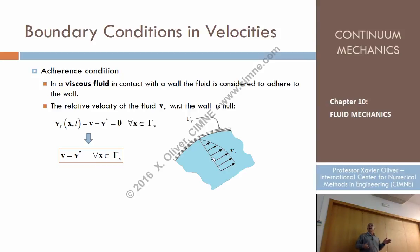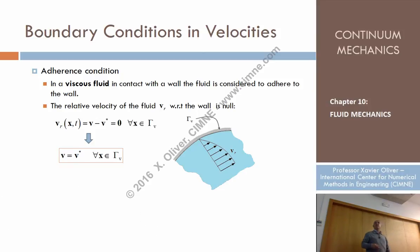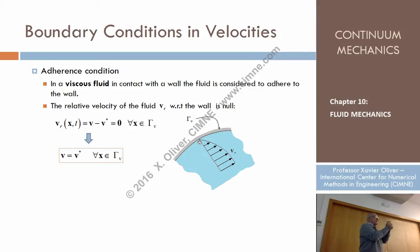The boundary layer is a very thin layer where there is a rapid transition from zero velocity at the wall to a non-zero velocity in the interior. This is one of the inherent difficulties of fluid mechanics. To be strict, the relative velocity equals zero at the boundary — particles are supposed to stick to the wall and follow it.